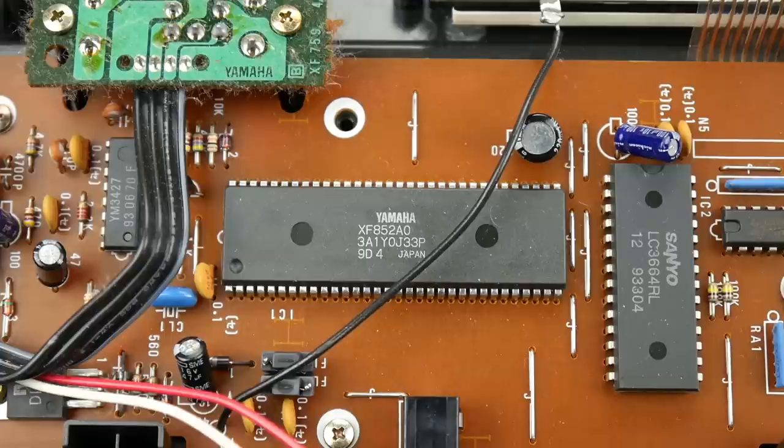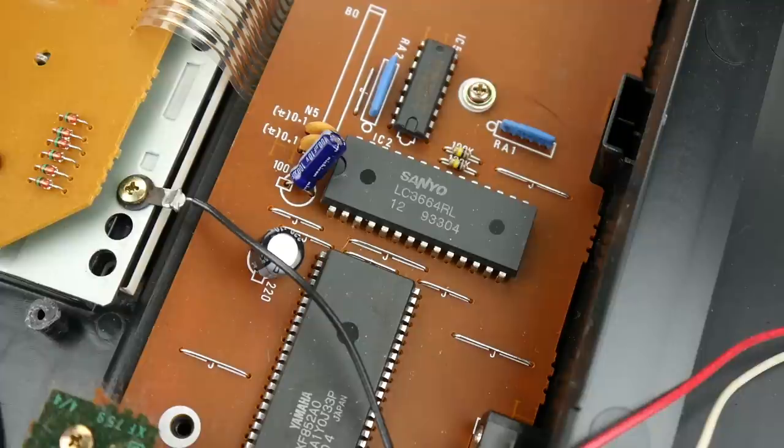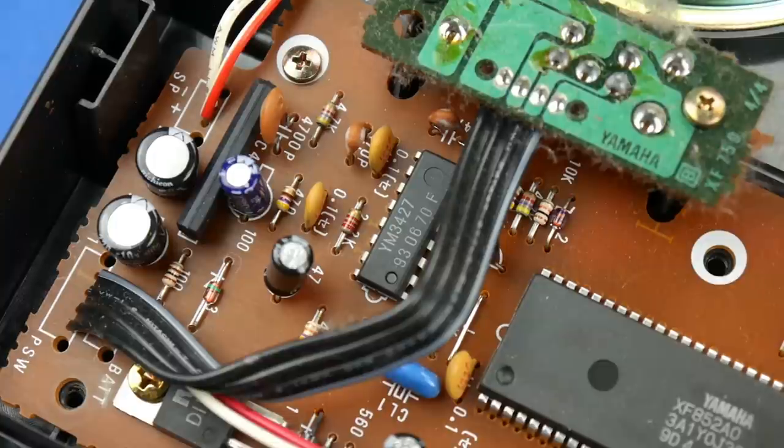This large IC is the CPU. Right next to it is a 64K RAM chip. And this little IC is the sound chip.